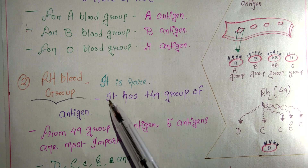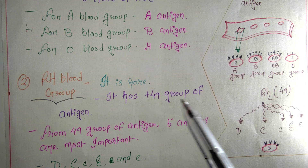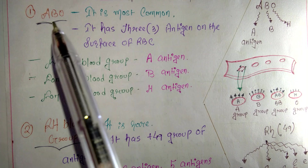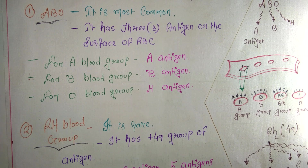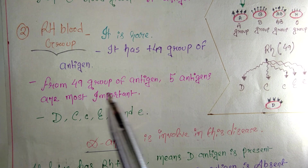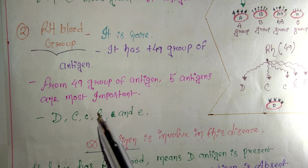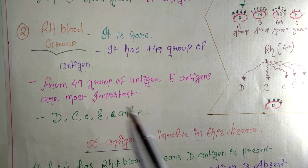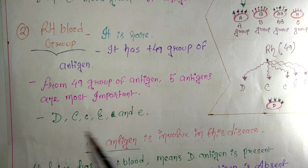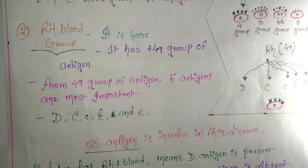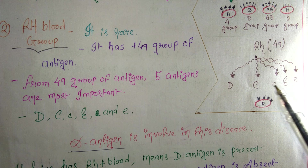Now let's see the RH blood group. ABO is one type; RH is a rarer type. The RH blood group has 49 or more groups of antigens. From these 49 antigens, five are most important: D (capital), C (capital), c (small), E (capital), and e (small). In RH incompatibility, the D antigen is the one involved.